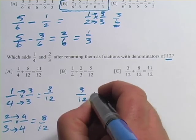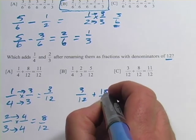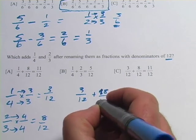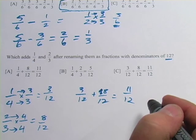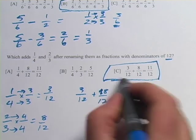Now we can add them together. We have 3/12 plus 8/12. Oops, not 18. 8/12 equals, well, 3 plus 8 is 11/12. And it looks like the right answer here is going to be C.